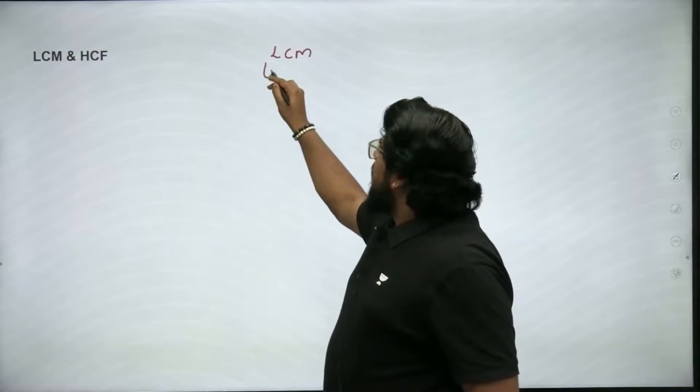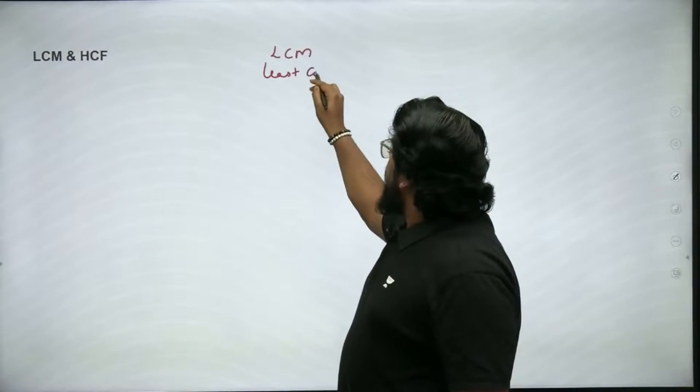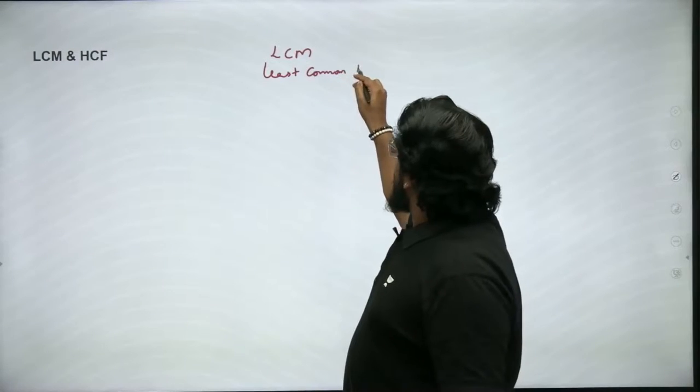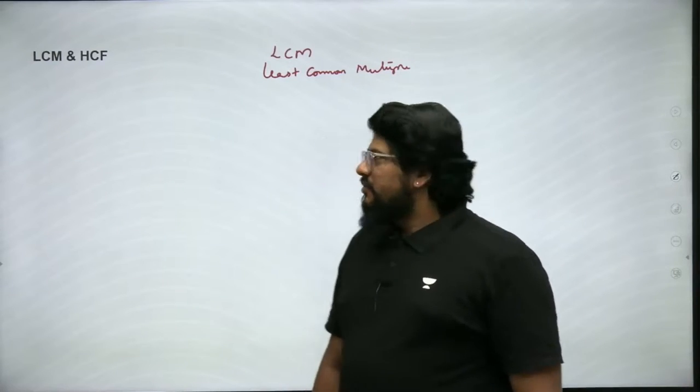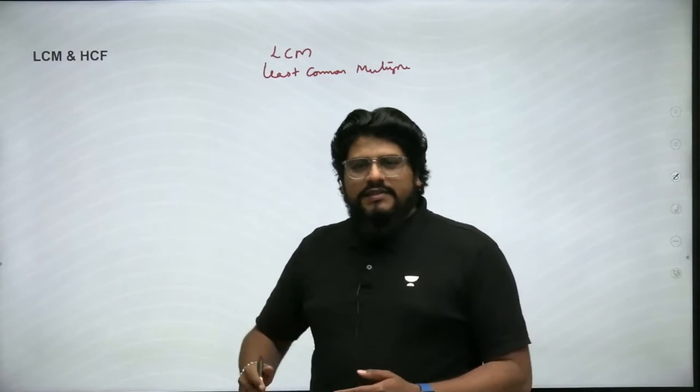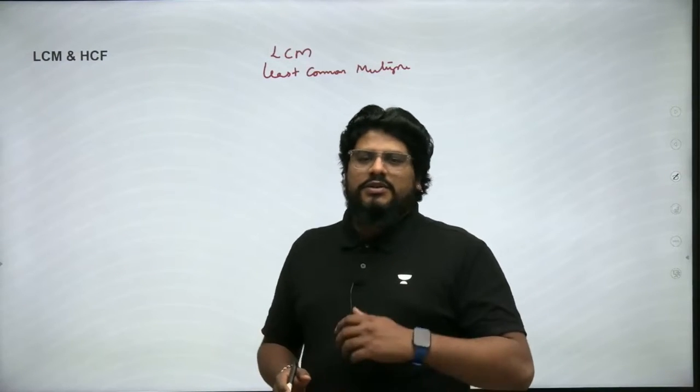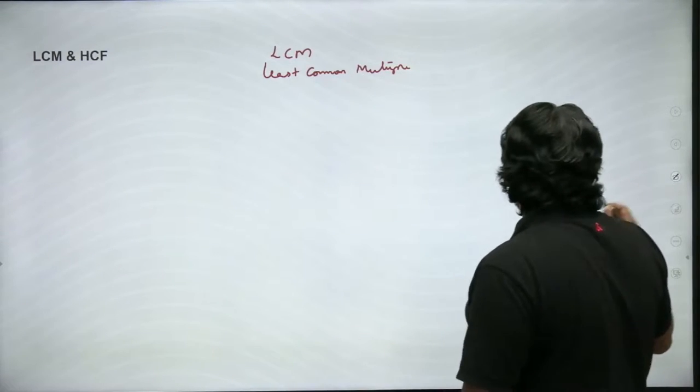In the previous video we covered factors and multiples — if you missed that, please go and watch it first. We also discussed what LCM and HCF are. LCM stands for Least Common Multiple. To find it, you look at the multiples of two numbers, identify the common multiples, and pick the least one. Let's pick two numbers as an example.